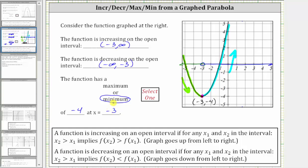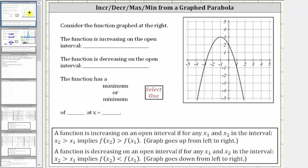Let's take a look at a second example. Again, looking at the graph from left to right, starting on the left and moving to the right, the graph is going uphill over this interval, and therefore the function is increasing until we reach the vertex. Notice now the vertex is a high point. The ordered pair for the vertex is negative one comma three. Then to the right of the vertex, the graph goes down, and therefore the function is decreasing over this interval.